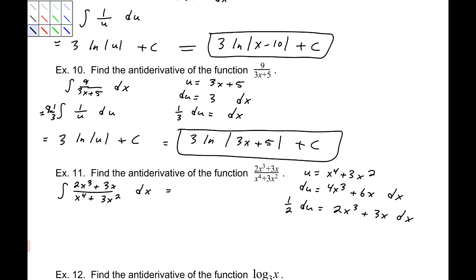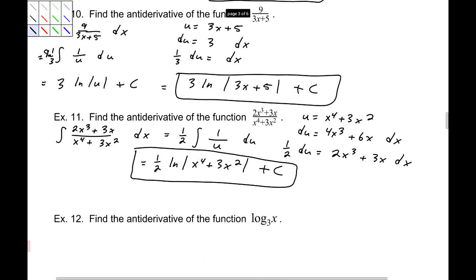So, this will turn into the integral 1 over 2 du, and that will be 1 over u. So, I have 1 half natural log of u x to the 4th plus 3x squared plus c. That's really all there is to that. Even though it looks pretty crazy, that's all there is to it.